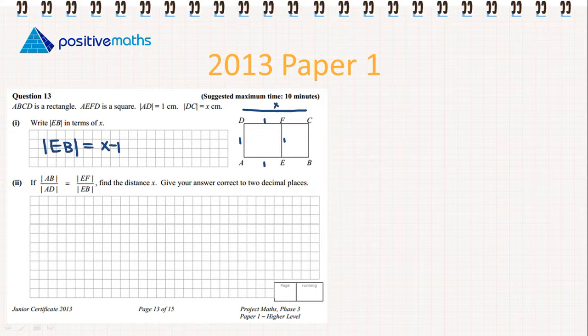So on to part 2. AB over AD is equal to EF over EB. We need to find the distance x, correct to 2 decimal places.